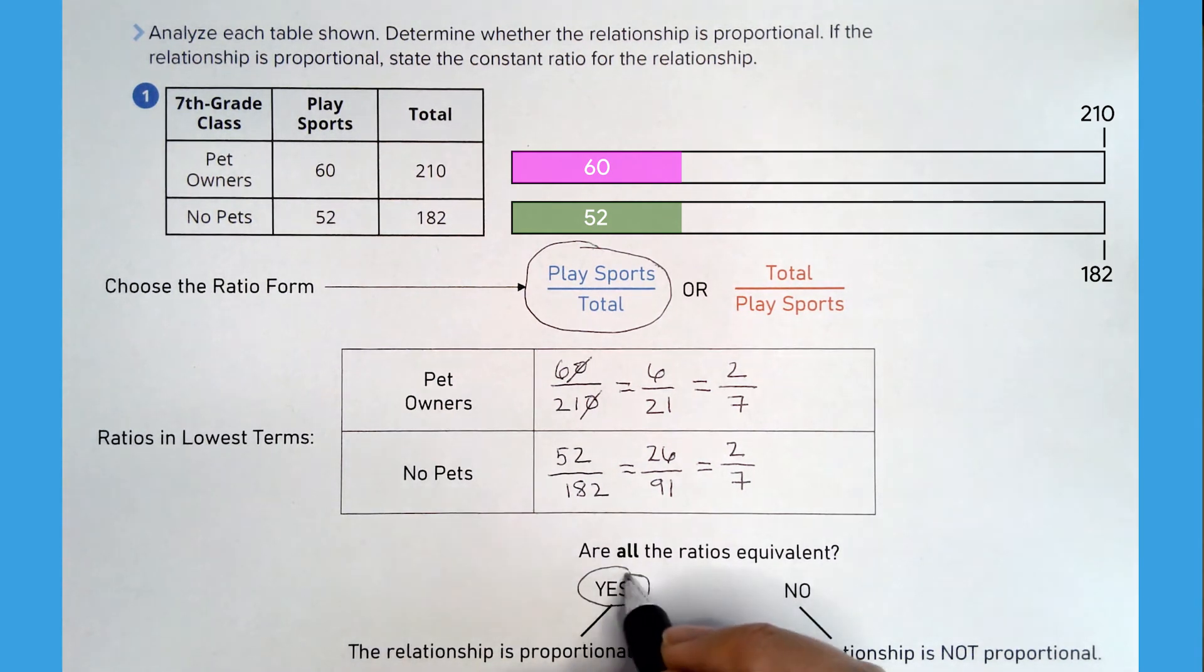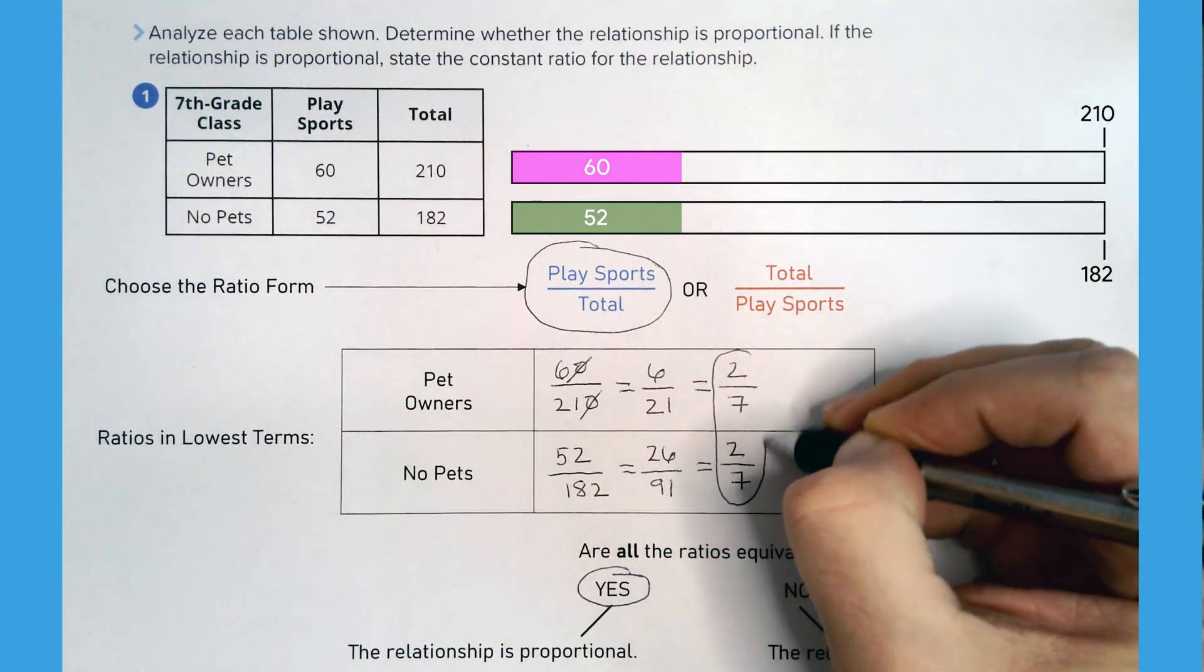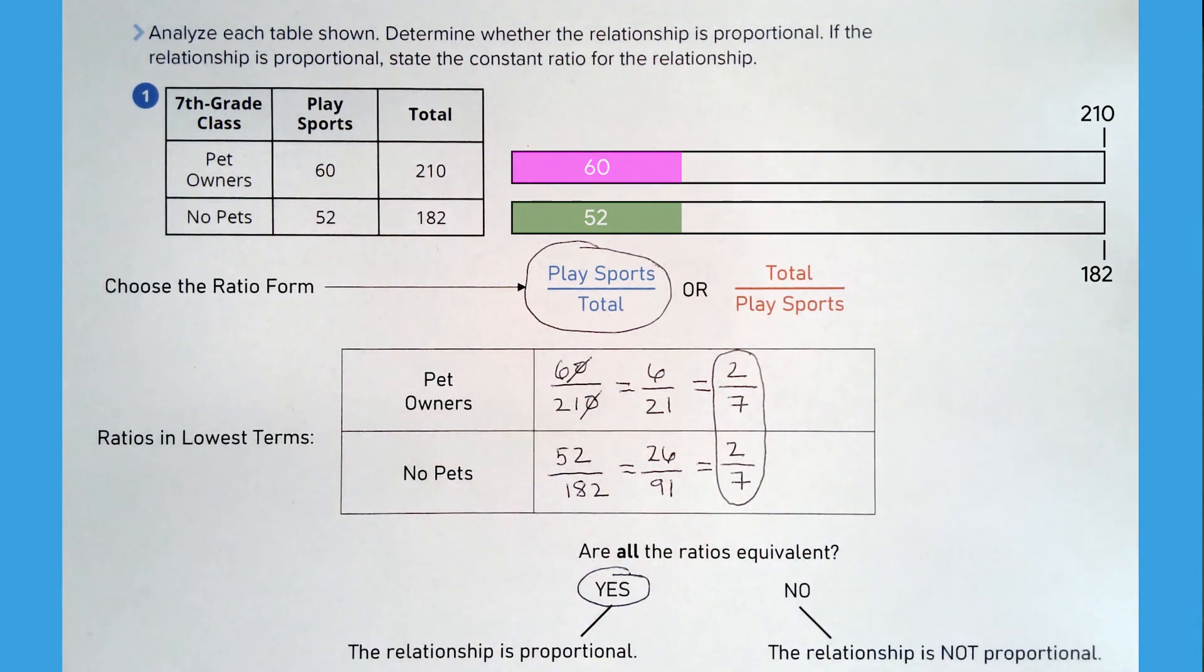The relationship is proportional. The constant ratio is 2 to 7, which means that 2 out of every 7 students in both groups play sports.